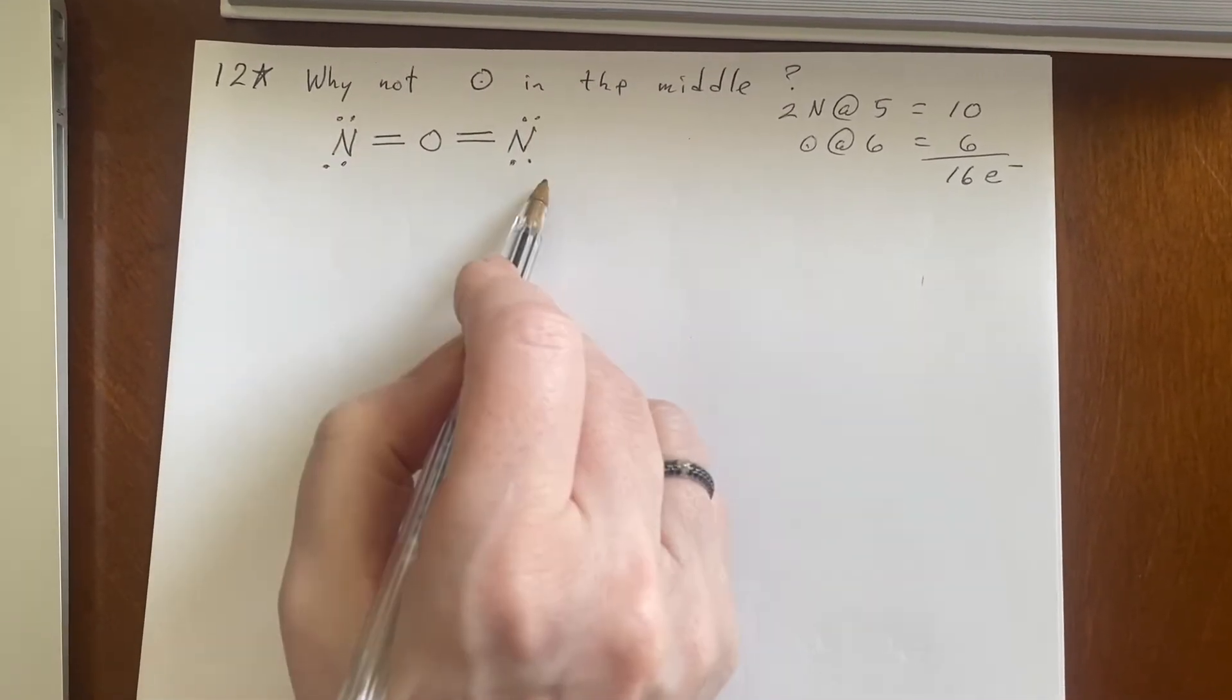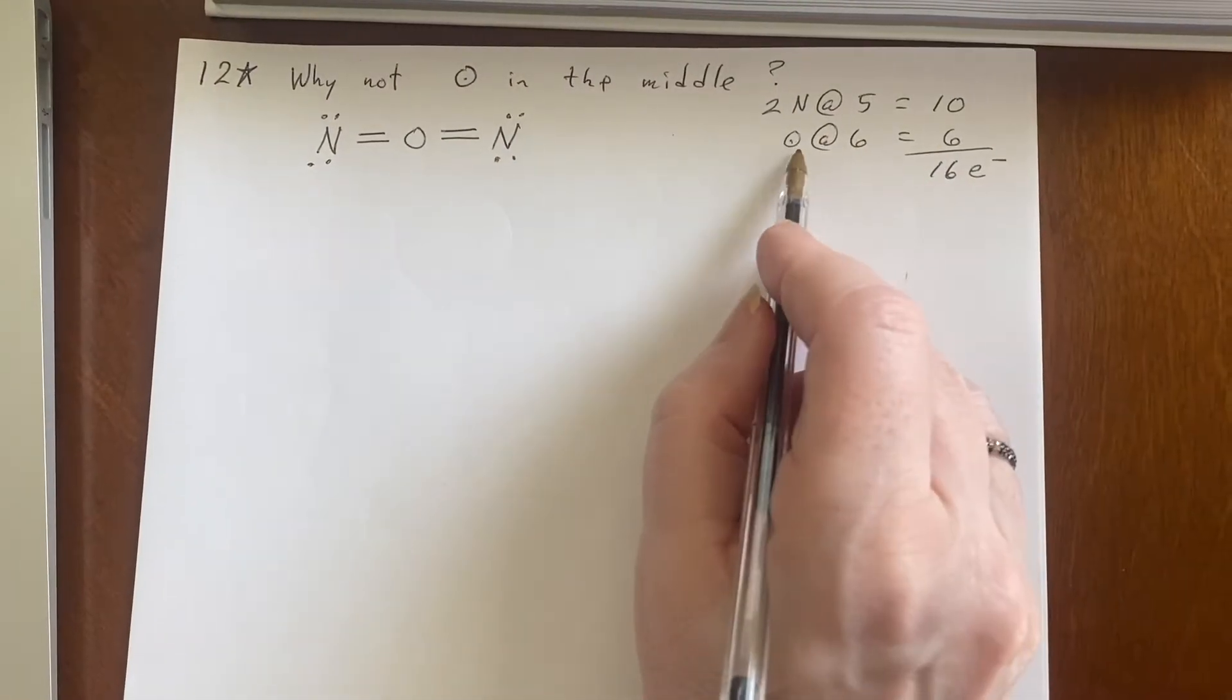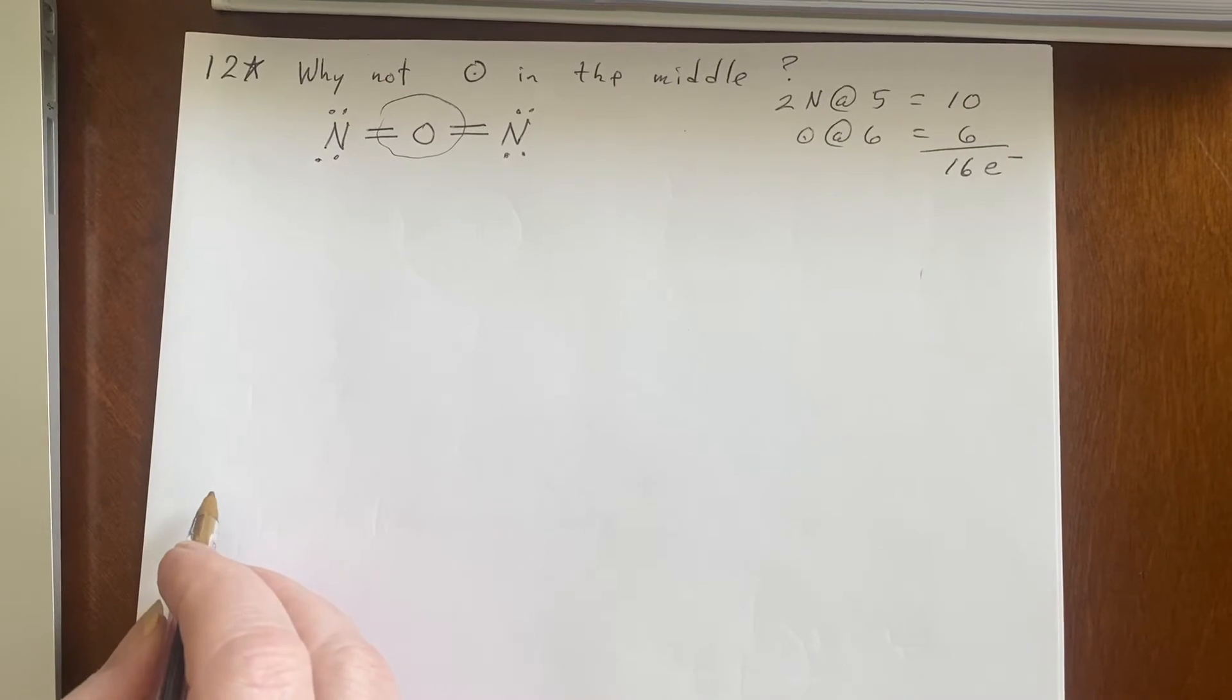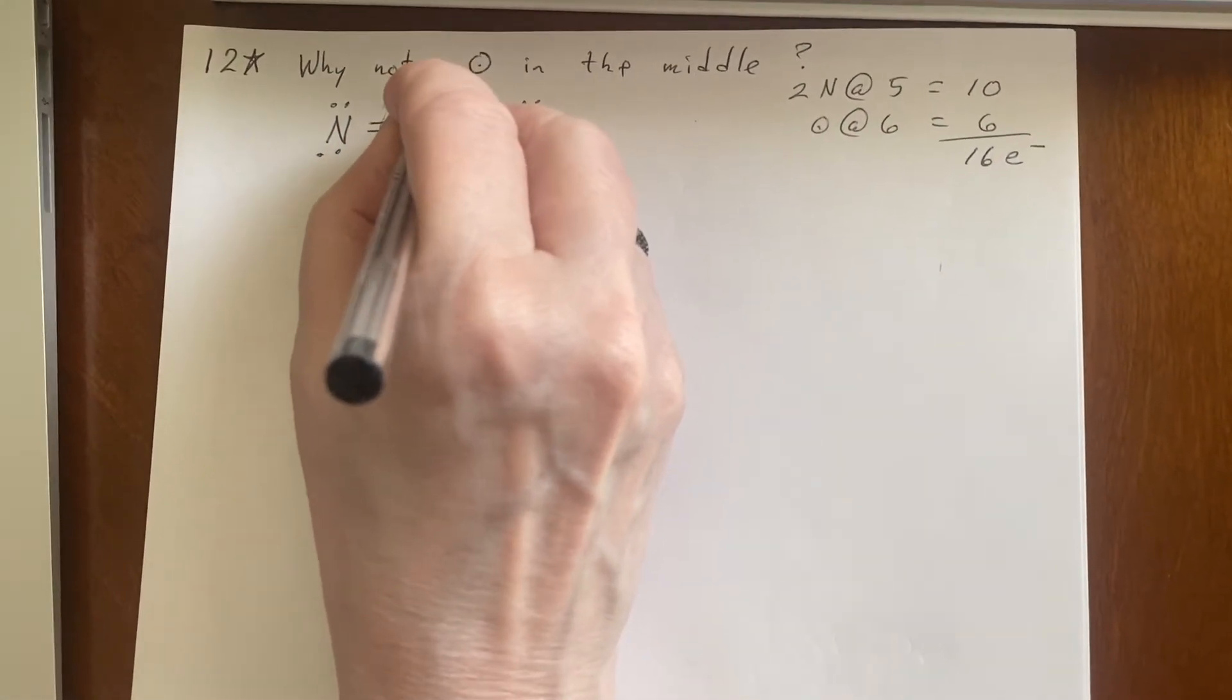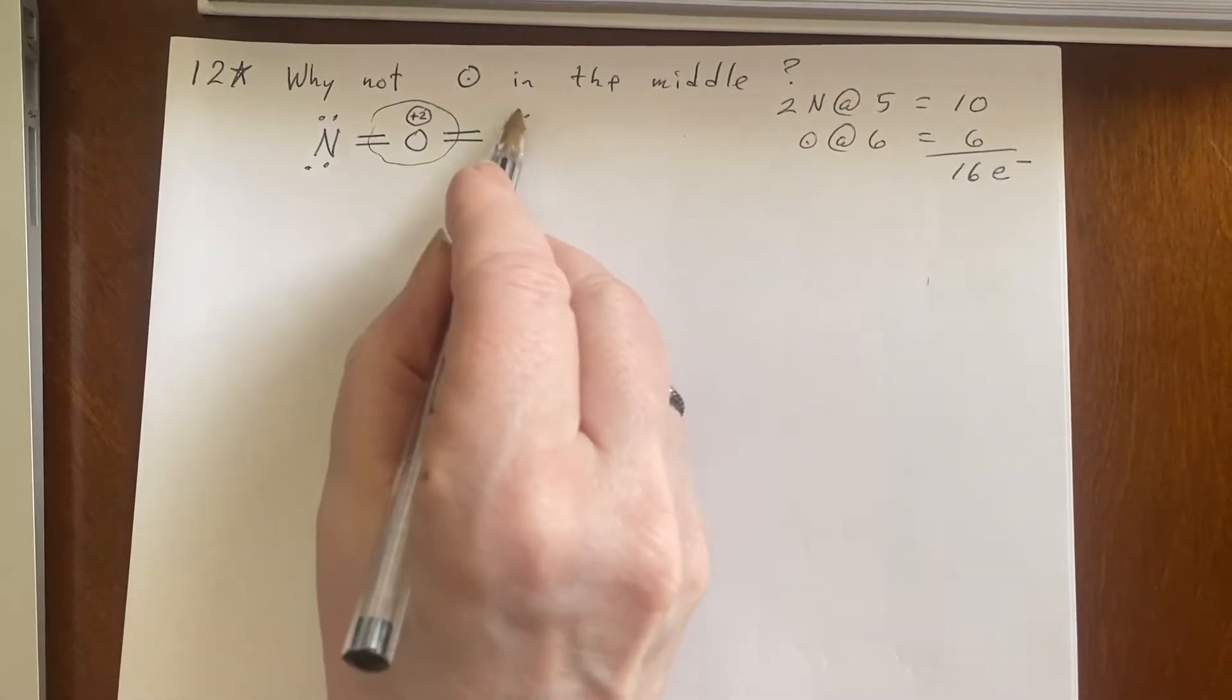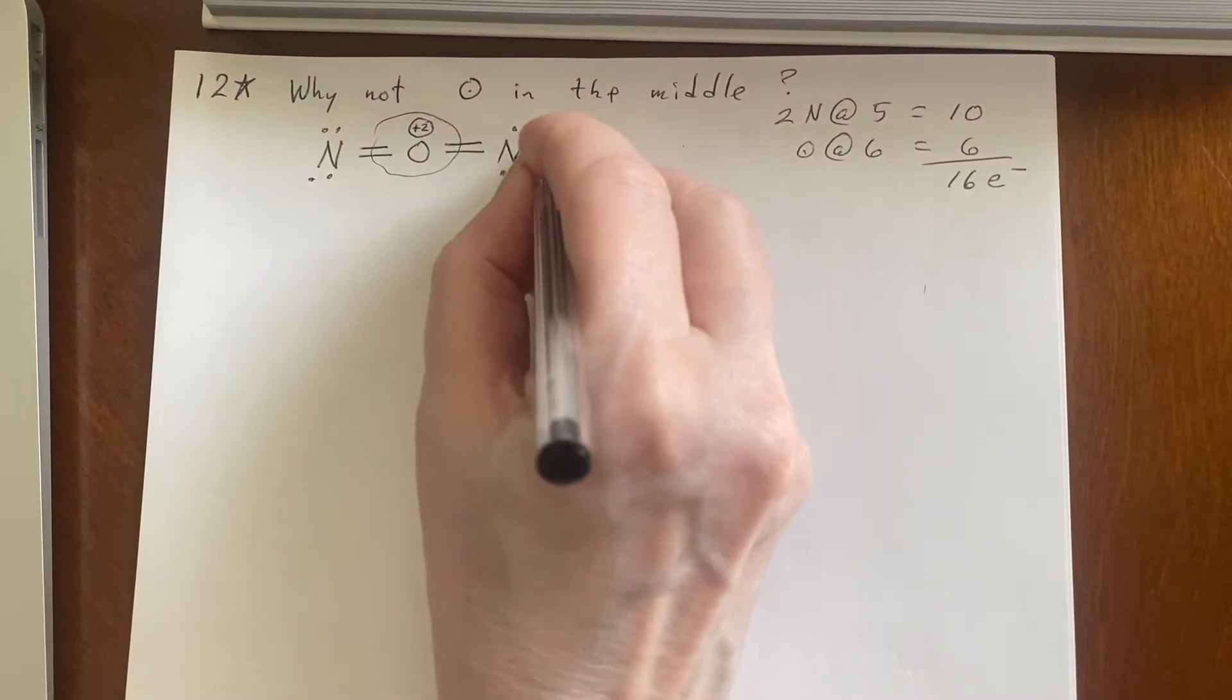What would the formal charges look like on this? Well, the Oxygen had come in with six, and now if I look at it, I see one, two, three, four. Oh, that is not good. That would be a formal charge of plus two. And the Nitrogens came in with five, and now they have one, two, three, four, five, six. So they're each at a negative.